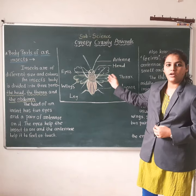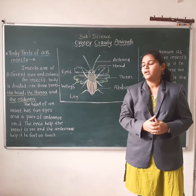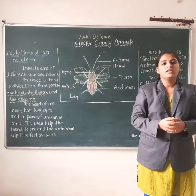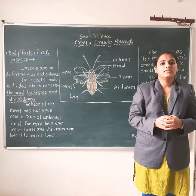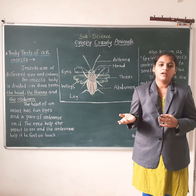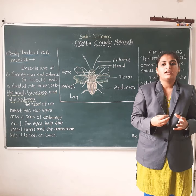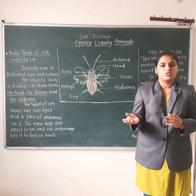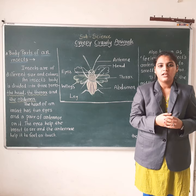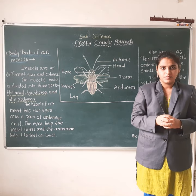Now we see in detail. Insects are of different sizes and colors. You can see in your surroundings that insects have different sizes and colors. For example, look at a butterfly and a grasshopper — they have different colors and are different in size.